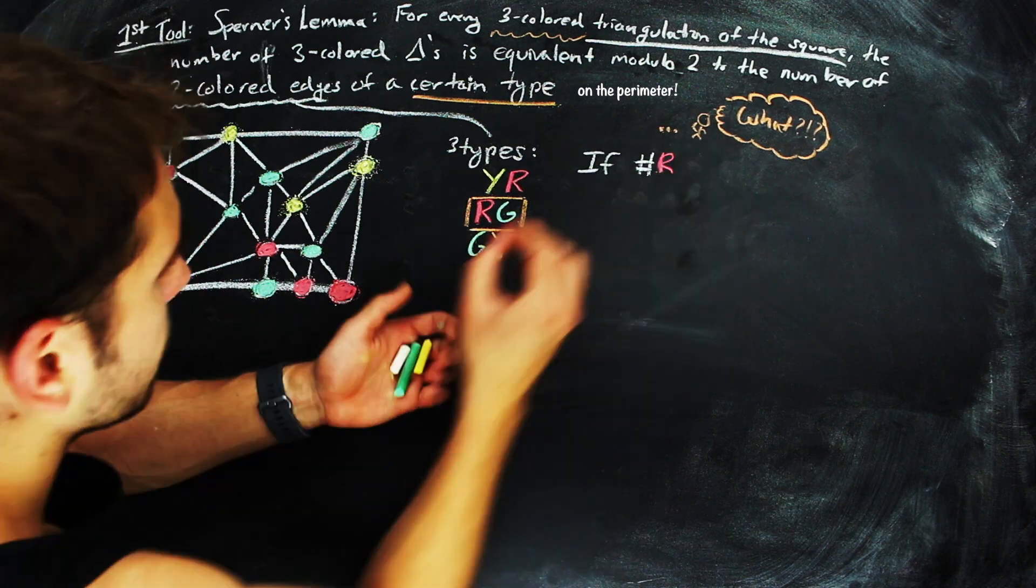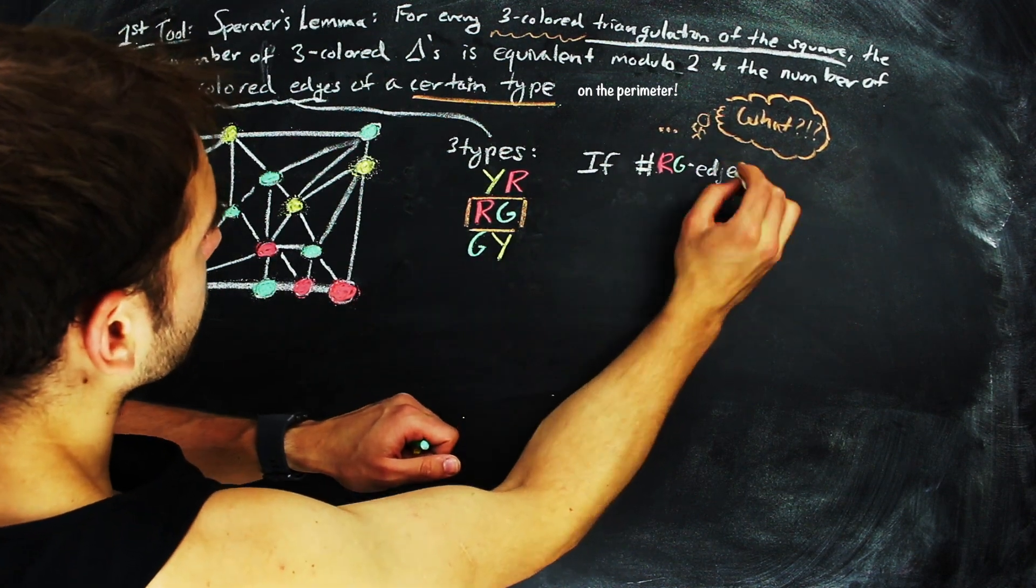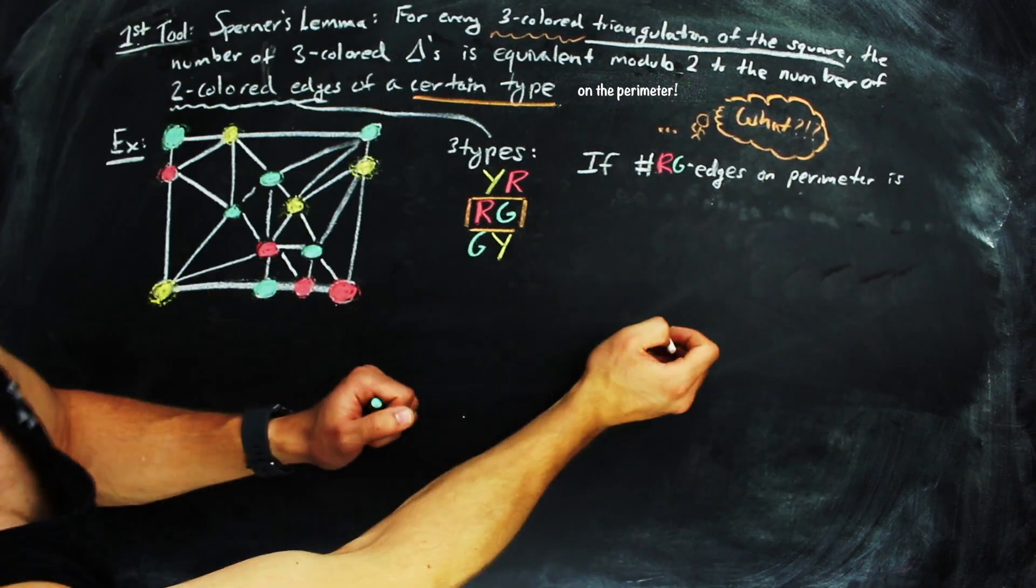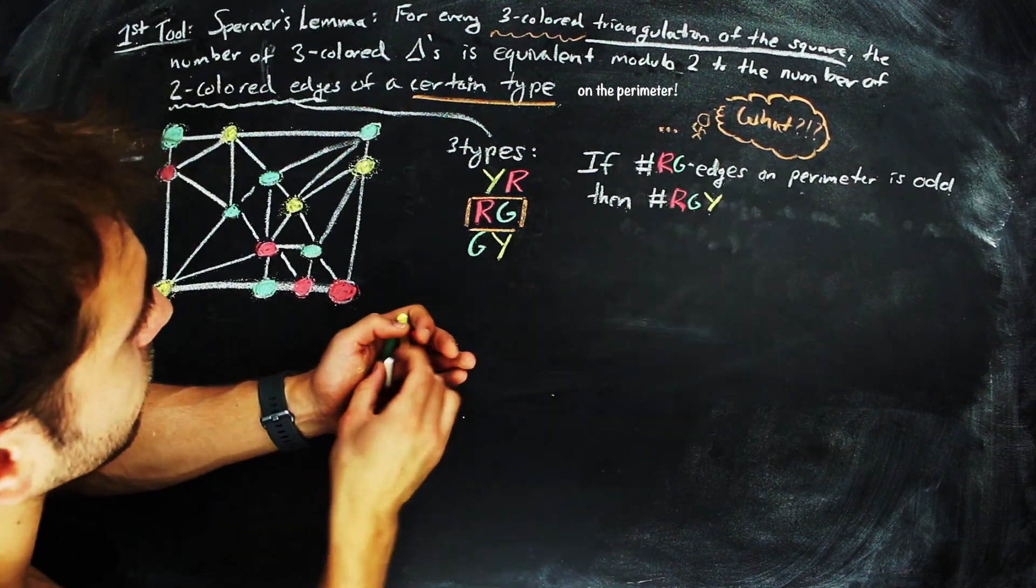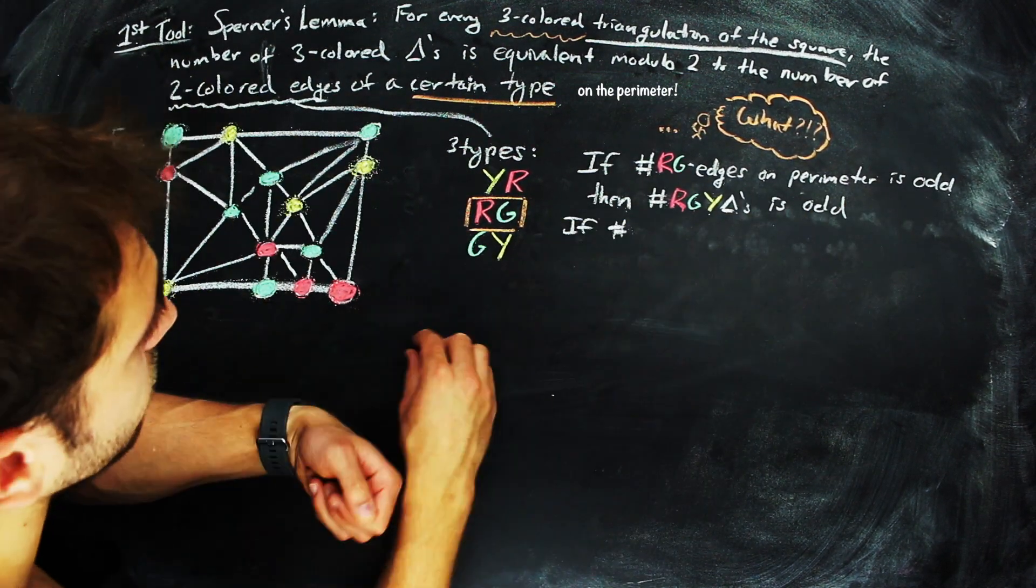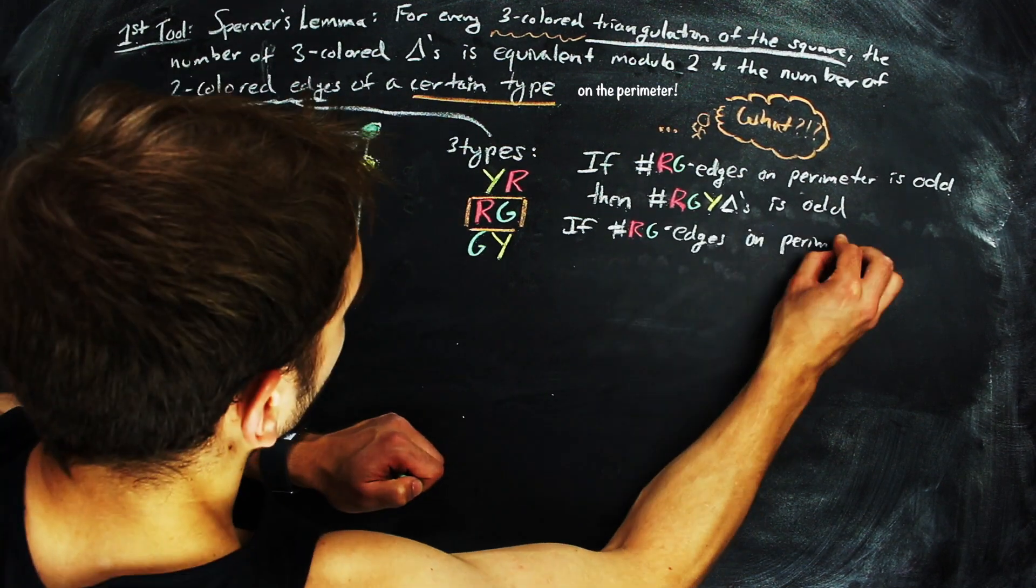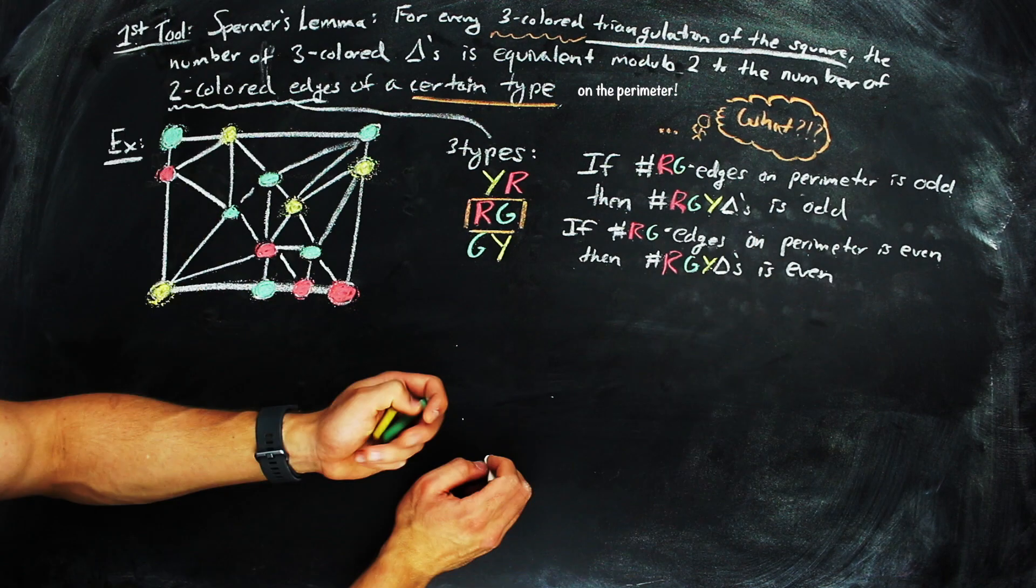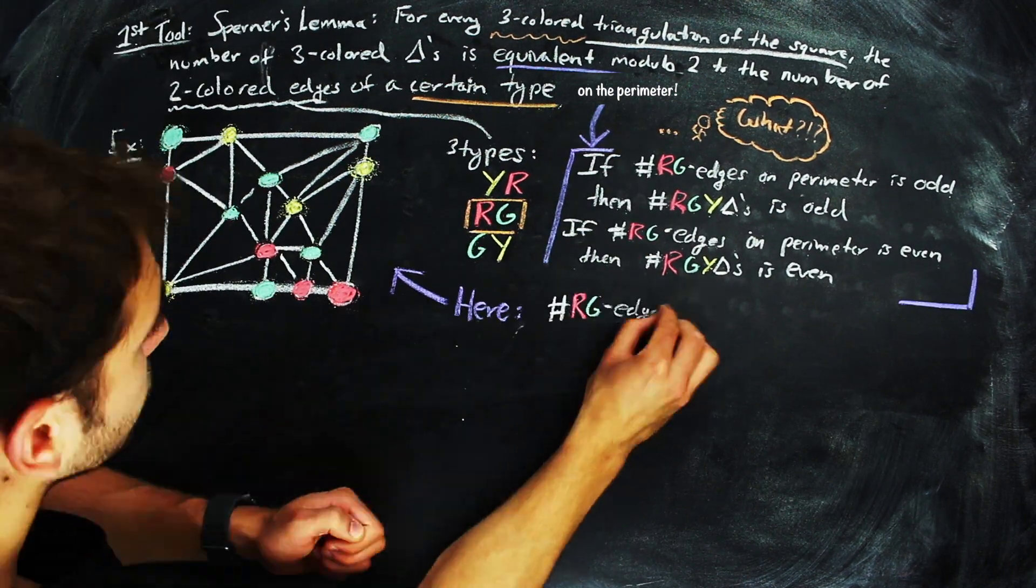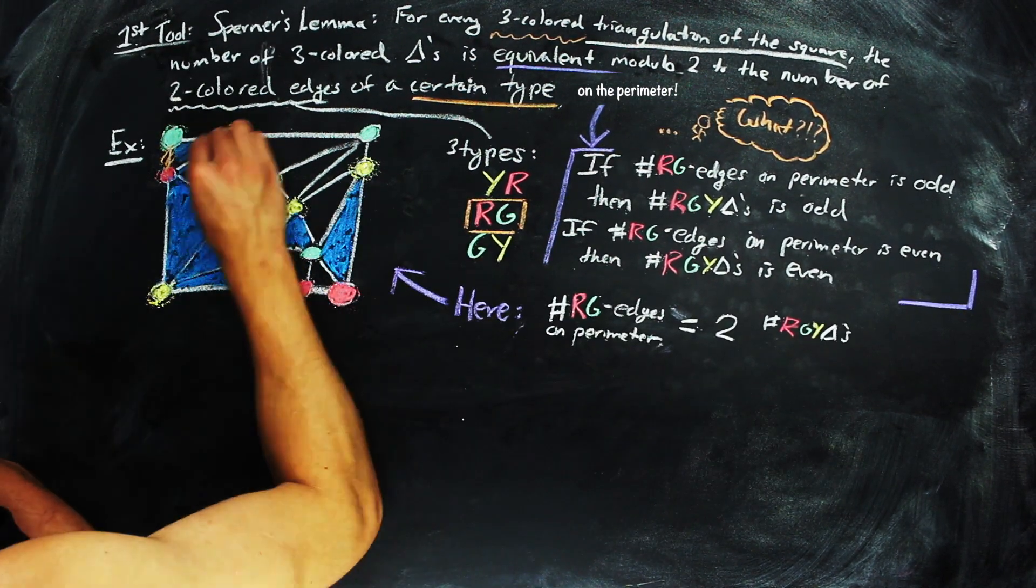Now, the modulo 2 part of the Lemma says that if the number of red-green edges on the perimeter is odd, then the number of three-colored triangles in the triangulation is also odd. And if the number of red-green edges on the perimeter is even, then the number of three-colored triangles in the triangulation is also even. For this diagram here, we can quickly see that this is the case.